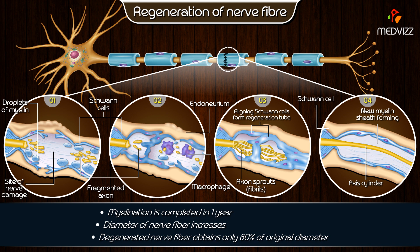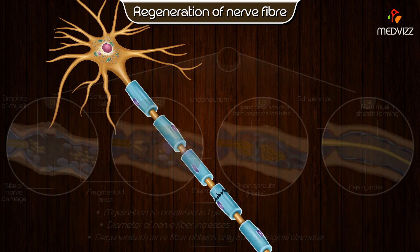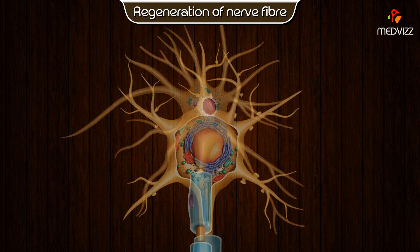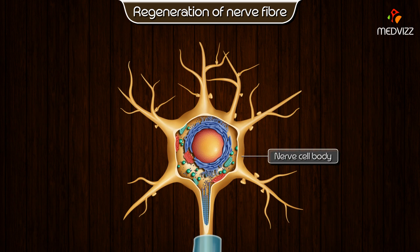The diameter of the nerve fiber gradually increases; however, the degenerated nerve fiber obtains only 80 percent of its original diameter. The newly formed internodes are also shorter than the original ones.